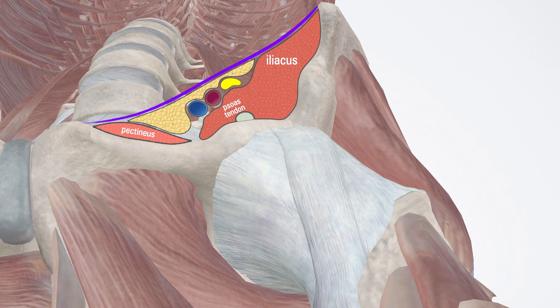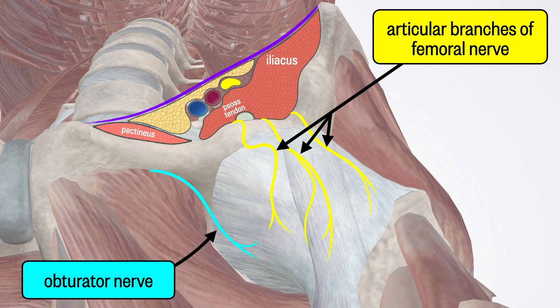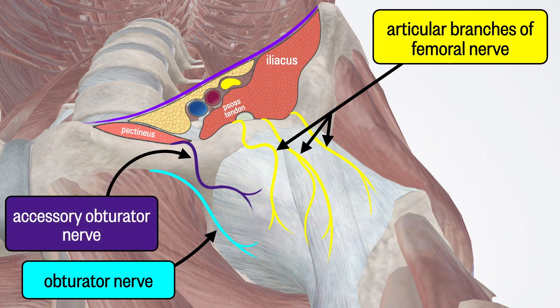The femoral nerve is here too, and we want to avoid blocking that to prevent quad weakness. Instead, we're going to focus on several smaller nerves that supply the hip joint. First, we have the articular branches of the femoral that take off proximal to the inguinal ligament and run deep to the iliacus muscle. An articular branch of the obturator travels laterally from the obturator foramen, and the accessory obturator nerve travels over the pelvic brim from the medial side. All of these contribute sensory fibers to the capsule and articular structures.